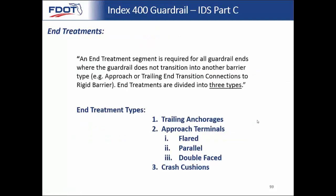Moving on to IDS part C: end treatments. An end treatment segment is required for all guardrail ends where the guardrail does not transition into a barrier type, such as an approach or trailing end transition connection to a rigid barrier. Anywhere you're not ending into a rigid barrier, you need some type of end treatment. End treatments are divided into three types following AASHTO nomenclature: trailing anchorages, approach terminals, and crash cushions. Approach terminals break down into subcategories: flared, parallel, or double-faced.